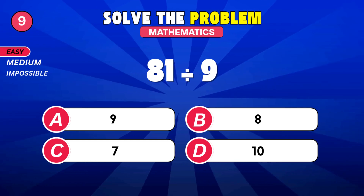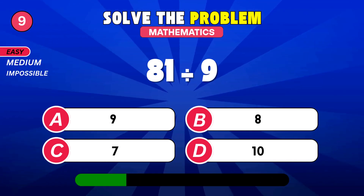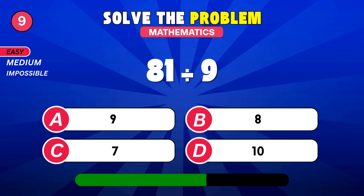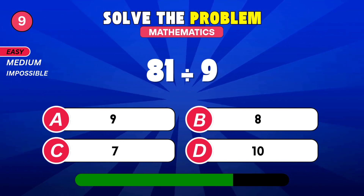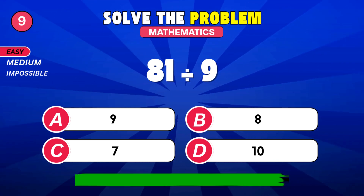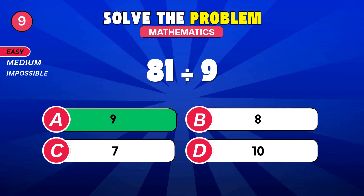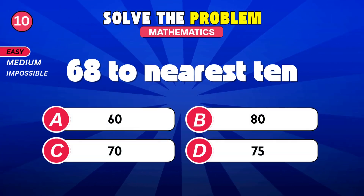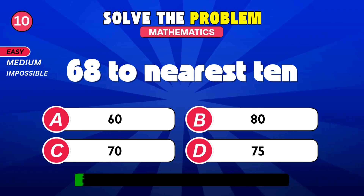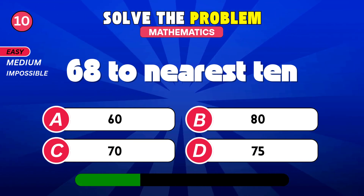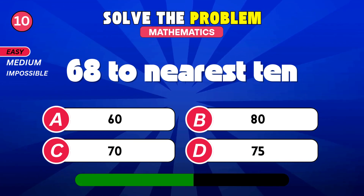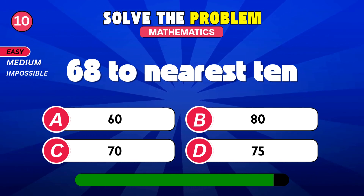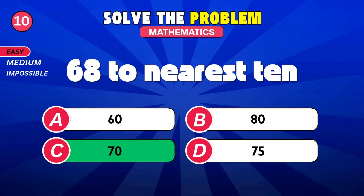What is 81 divided by 9? 9. Round 68 to the nearest 10. 70.